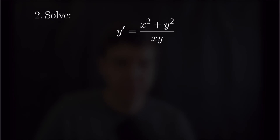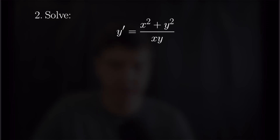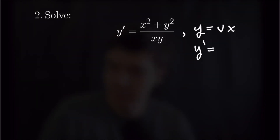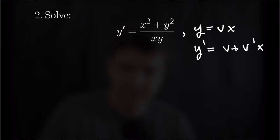For problem number two, we have that y prime is equal to x squared plus y squared over x times y. We're going to begin by making the following substitution: y is equal to v times x. That means that y prime is going to be equal to v plus v prime times x by the product rule, because v is a function of x.